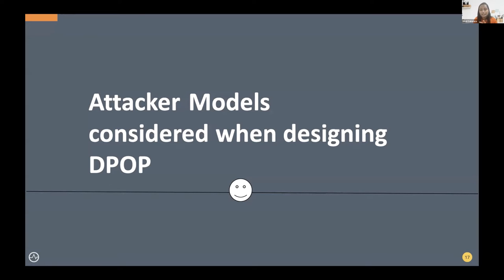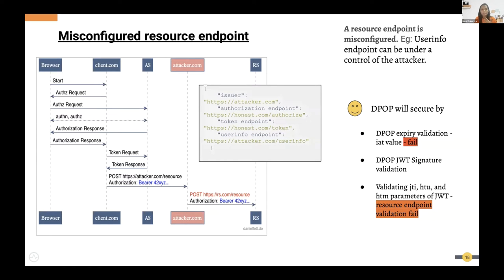Let's discuss the attacker models considered when designing DPoP. The first is a misconfigured resource endpoint: if an attacker in the middle has misconfigured one of the resource endpoints the user is accessing, there is a good chance that once they receive an access token, they can perform a replay attack to get the resource from the resource server.